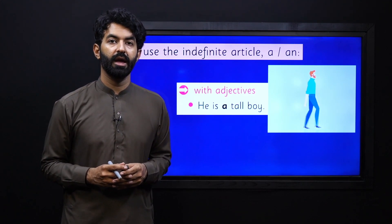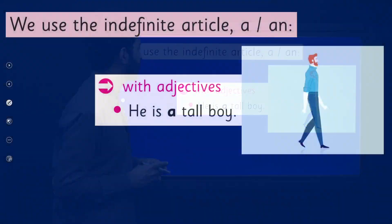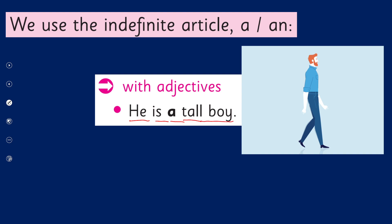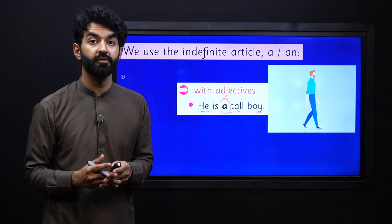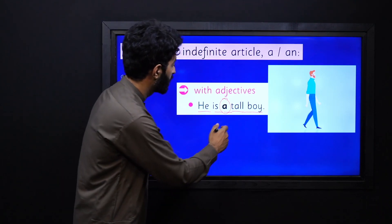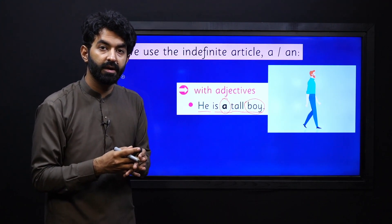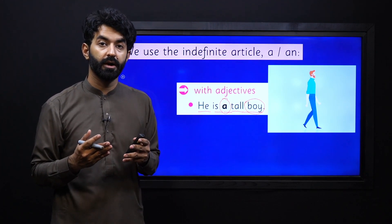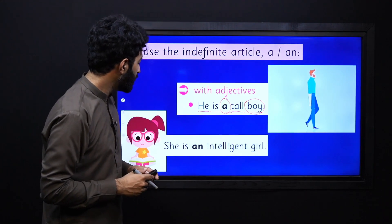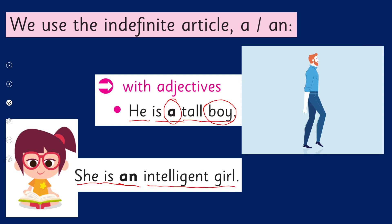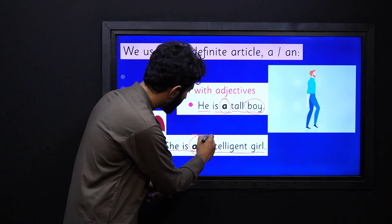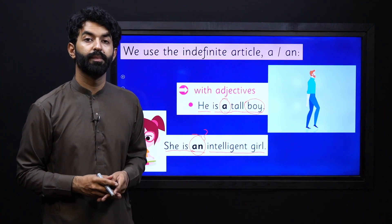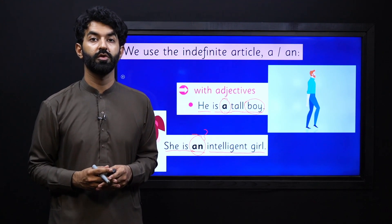How do we use these articles a and an with adjectives? 'He is a tall boy' — can you find the article? Yes, a, and it is coming before the adjective 'tall'. Whenever we are talking about a noun and an adjective comes before it, we use a or an. Here we have another sentence: 'She is an intelligent girl.' Here 'an' comes before the adjective 'intelligent'. Why not a? Why an? Because this adjective begins with a vowel. That's why we use an before it.